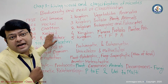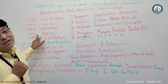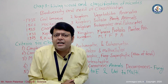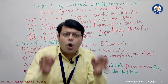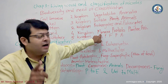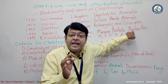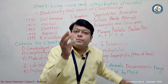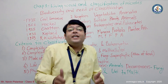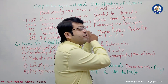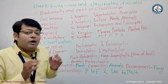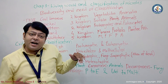After that, a new scientist named Copeland, in 1930, invented a four-kingdom classification system. He divided all living systems into four classes: Monera, Protista, Plantae, and Animalia. However, he did not include fungi in this four-kingdom classification system.